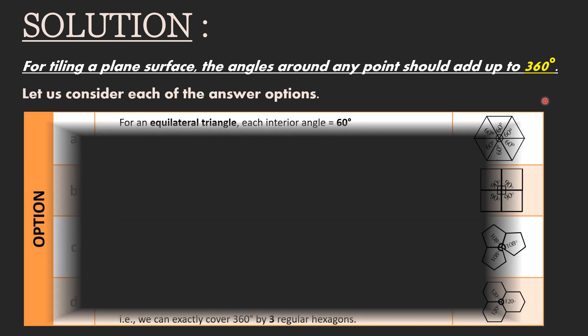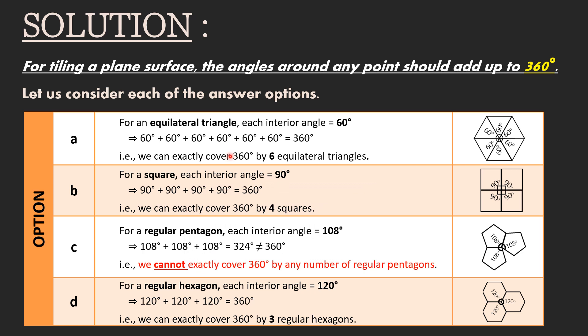First of all, let us consider option A. For an equilateral triangle, each interior angle equals 60 degrees. 6 times 60 degrees equals 360 degrees. That is, we can exactly cover 360 degrees by 6 equilateral triangles.